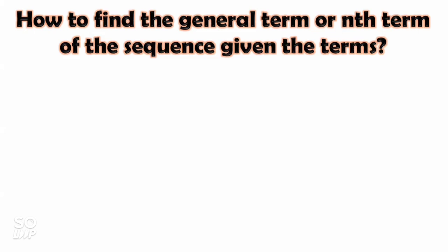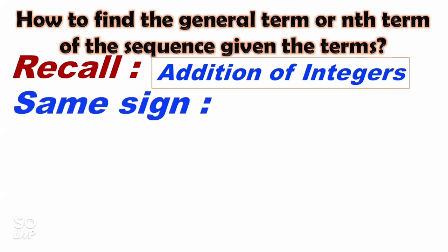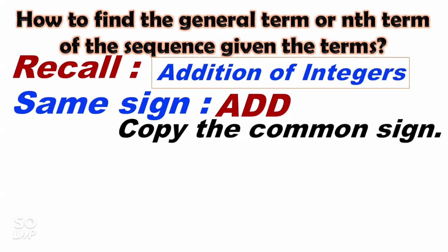How to find the general term or nth term of a sequence given the terms? First, we're going to recall addition of integers. Most of the time, this is forgotten. Let's recall a little. Same sign — when the integers have the same sign, we add them and then copy the common sign. For example, if both are positive, add them and copy the positive sign. Or if both are negative, add them and copy the negative sign.